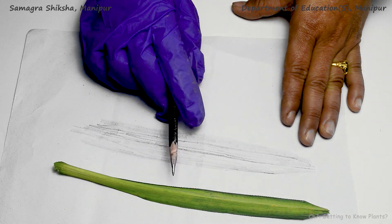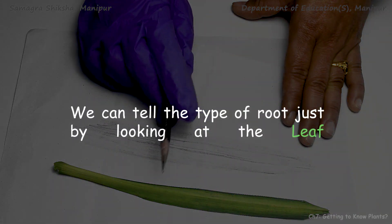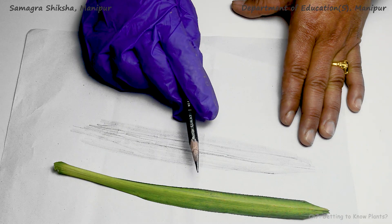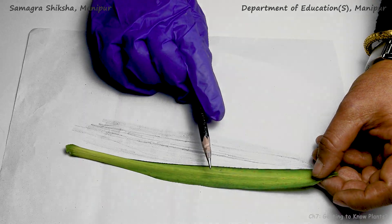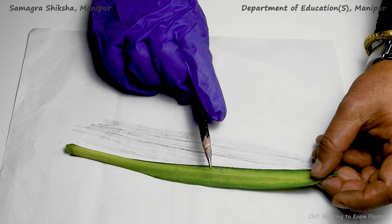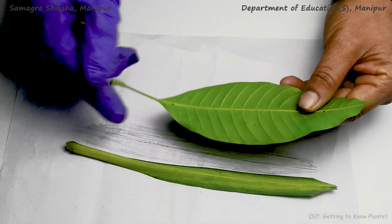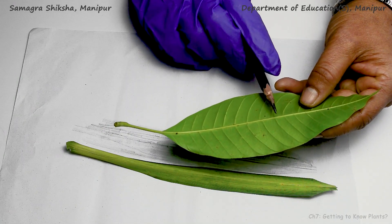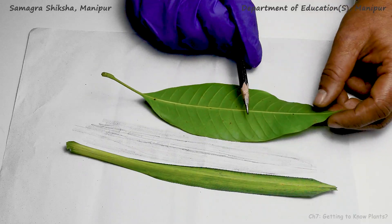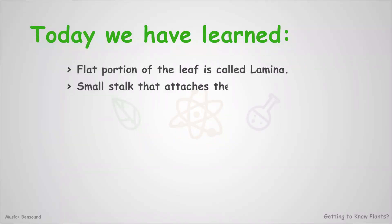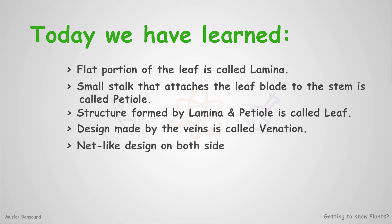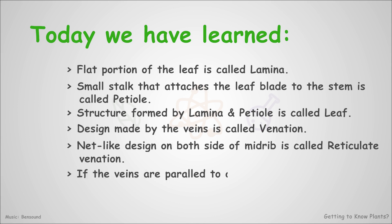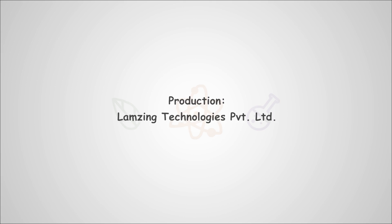The leaf, the blade and the structure of the leaf — this is the type of roots. The plant is also a plant. This is the root system of the root system.